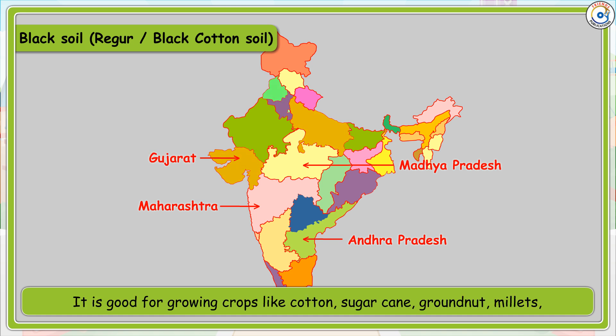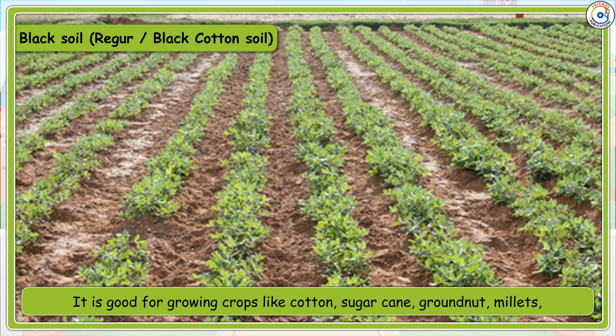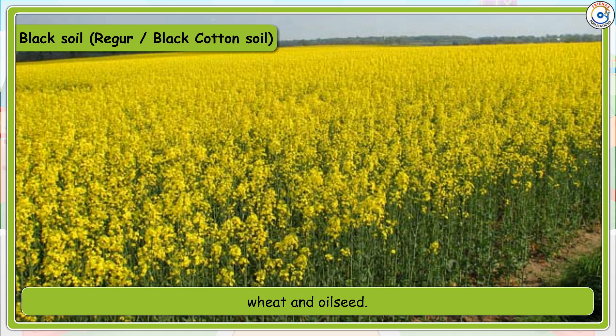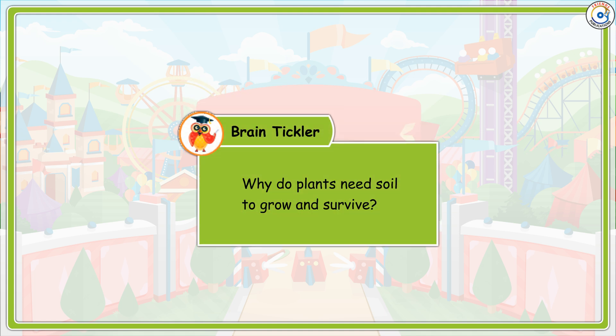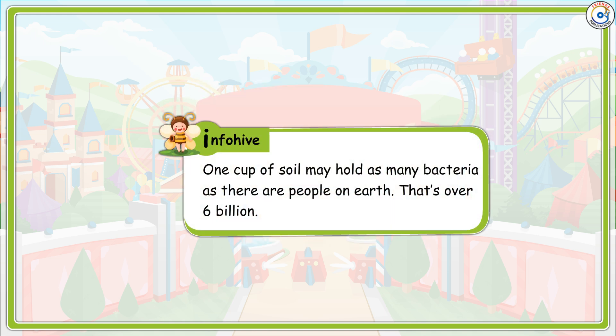Black soil is good for growing crops like cotton, sugarcane, groundnut, millet, wheat, and oilseed. One cup of soil may hold as many bacteria as there are people on earth — that's over 6 billion.